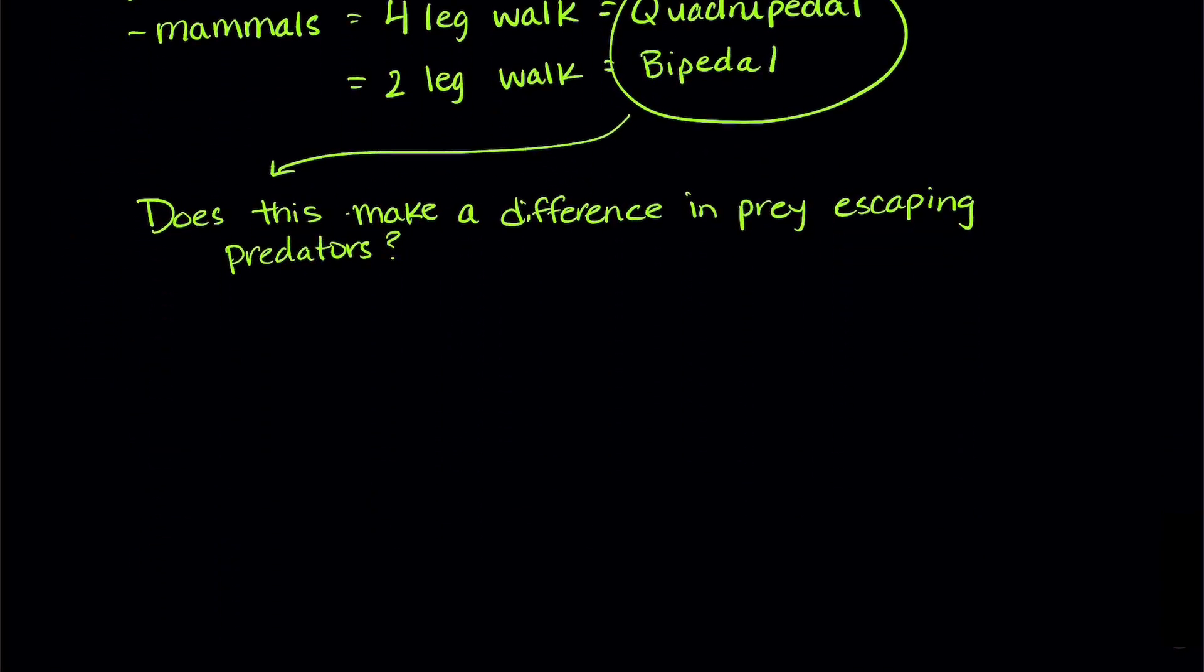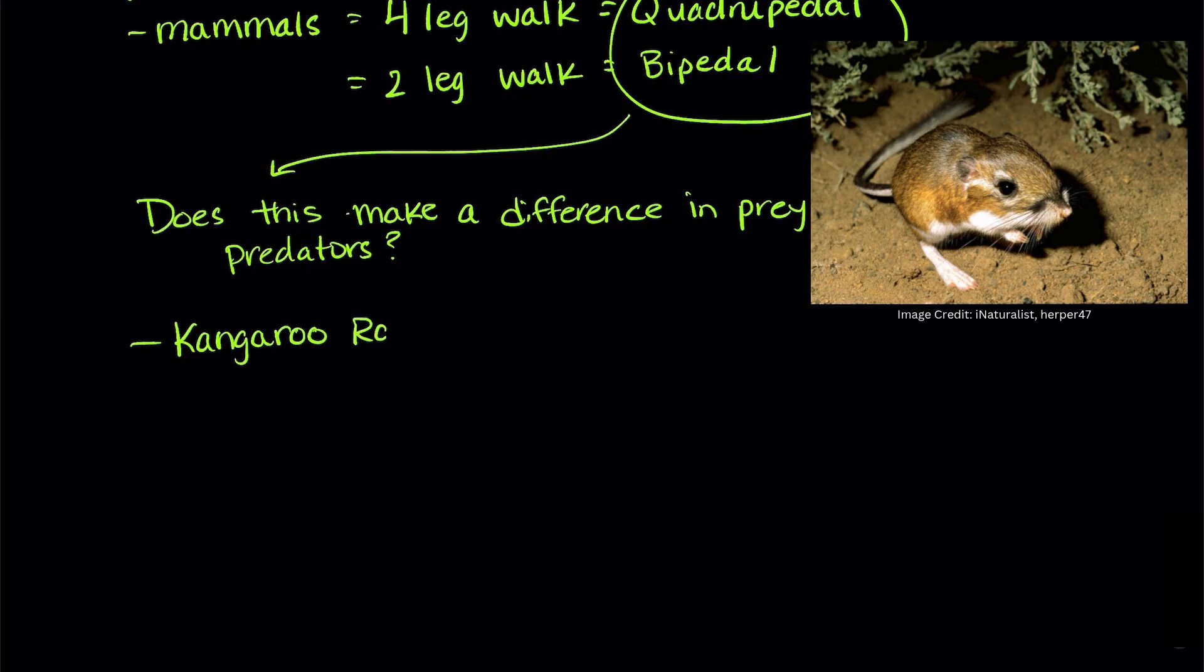And they looked at some really cool animals. One was the kangaroo rat. It's bipedal, and it's famous for its high jumps, just like a kangaroo. And they compared the kangaroo rat to several other rodents that were quadrupedal.